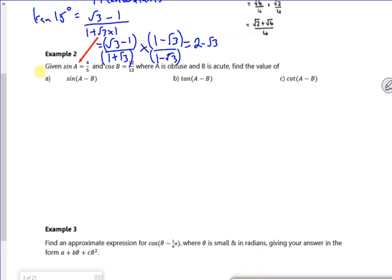Hi everyone, so second video now for that first lesson on trig. It might mess with your head a bit more, but you'll get used to it, don't worry about it. Right, so the second example says given that sine A is 4/5 where A is obtuse and cos B is 12/13 where B is acute, find the value of that.